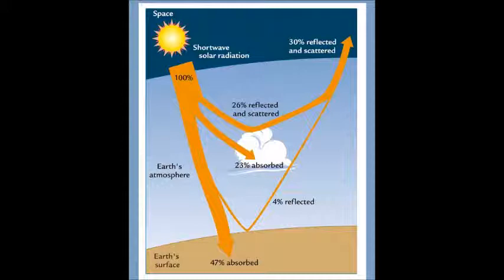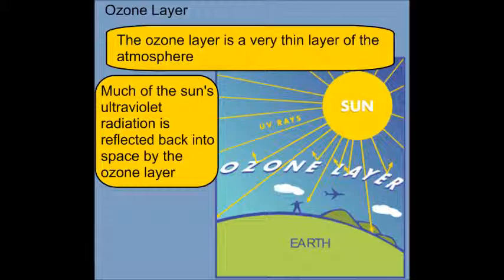A very essential piece of that 30%, the thing that's responsible for that, is the ozone layer. The ozone layer is a very thin layer of atmosphere, and it's part of the stratosphere. It's so thin it's about the thickness of a penny. Much of the sun's ultraviolet radiation is reflected back into space by the ozone layer. This is really significant because ultraviolet radiation from the sun contains a lot of energy in that wavelength, and that can be harmful to living things on Earth.